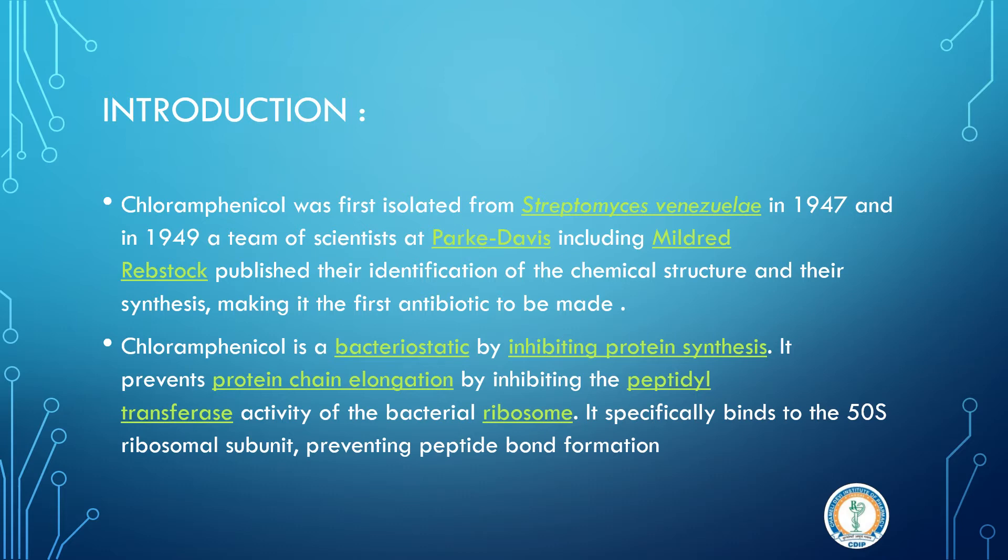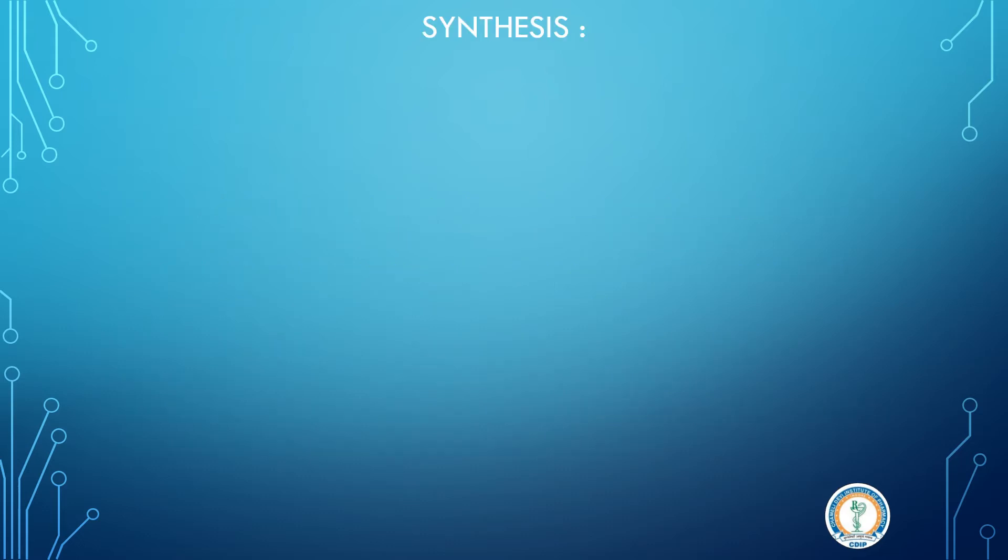Now moving towards the synthesis. The synthesis of chloramphenicol will require the starting material paranitroacetophenol. Here we have phenyl group, nitro group, and acetyl group, so we get paranitroacetophenol.